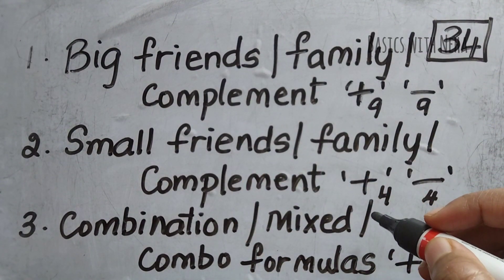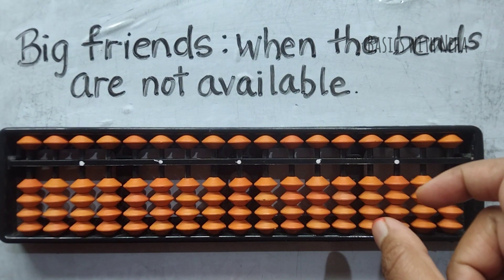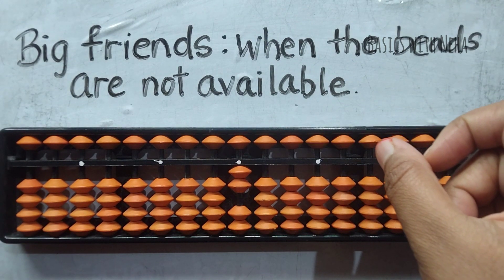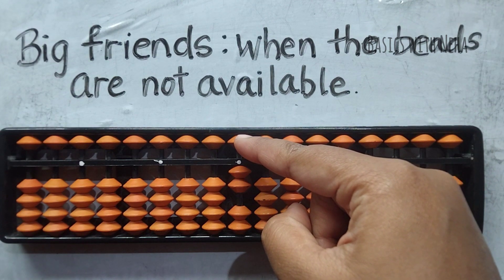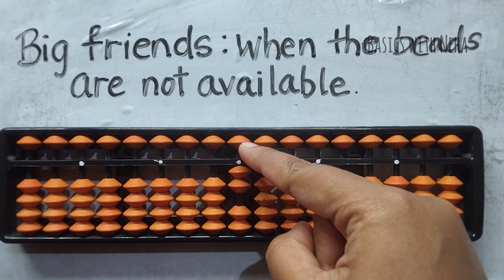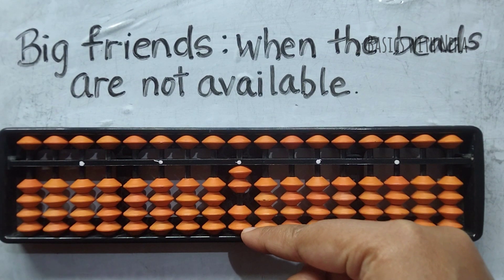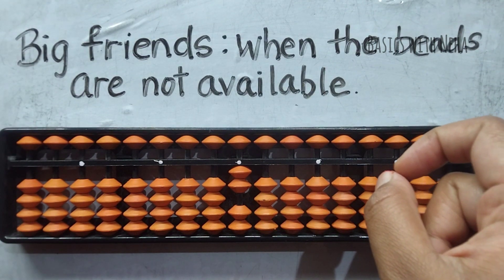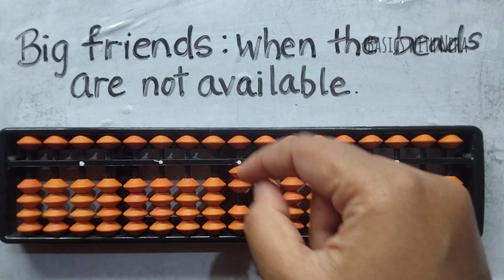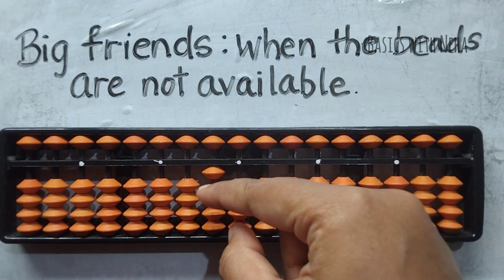Big friends formulas are used when the beads are not available. For example, if I have two in the one's rod and I need to add eight — to add eight, I'll first check the availability of beads. I see I have only seven more beads available to add; I don't have eight. In this situation, I'm going to use the big friend formula for that particular number. The big friend formula for eight is plus 10 minus 2, so my answer will be 10.